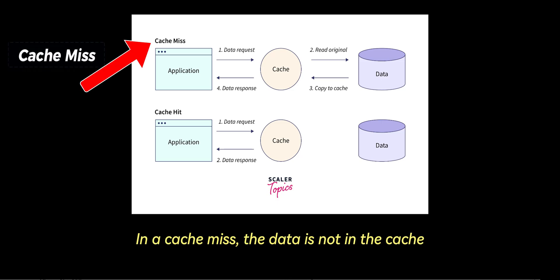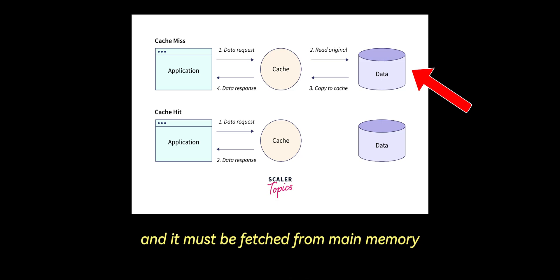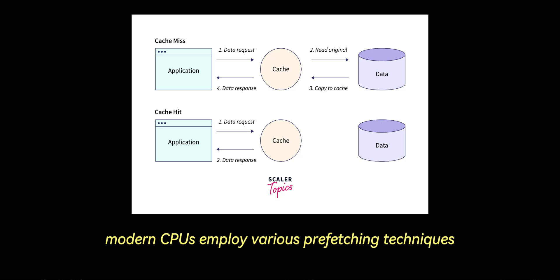In a cache miss, the data is not in the cache and it must be fetched from main memory, which is much slower. This can lead to hundreds of clock cycles of delay or latency. To minimize cache misses, modern CPUs employ various pre-fetching techniques to predict the data that will be needed soon and load it into the cache before the CPU requests it.